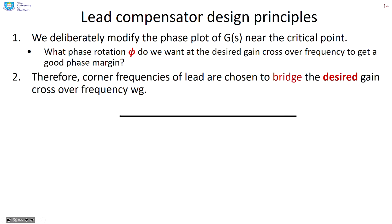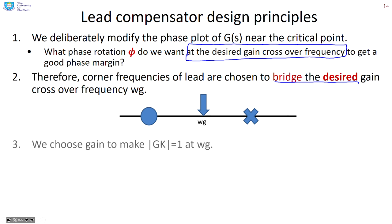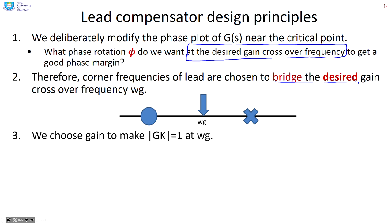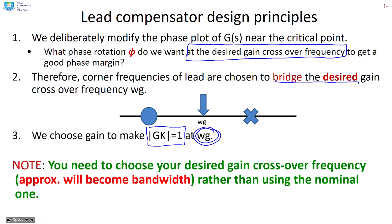The design principle is to deliberately modify the phase plot near the critical point. We ask ourselves what phase rotation we want at the desired gain crossover frequency — that's a key point. You have to decide what gain crossover frequency you would like. The corner frequencies are chosen to bridge the desired gain crossover frequency, with the pole and zeros equidistant on a log plot either side. The final step is to ensure that omega_g becomes the gain crossover frequency by making sure the modulus of G·K equals 1 at that frequency.